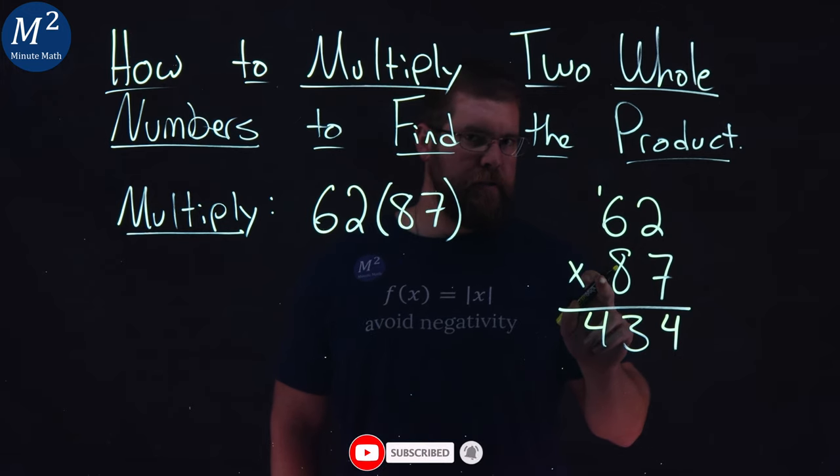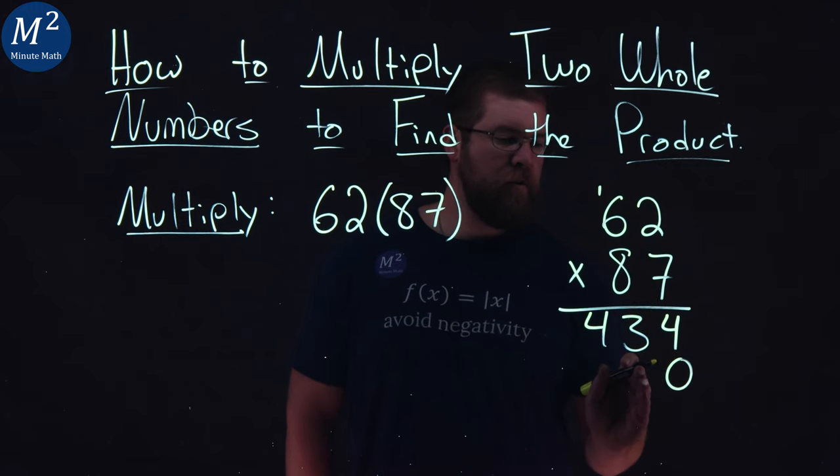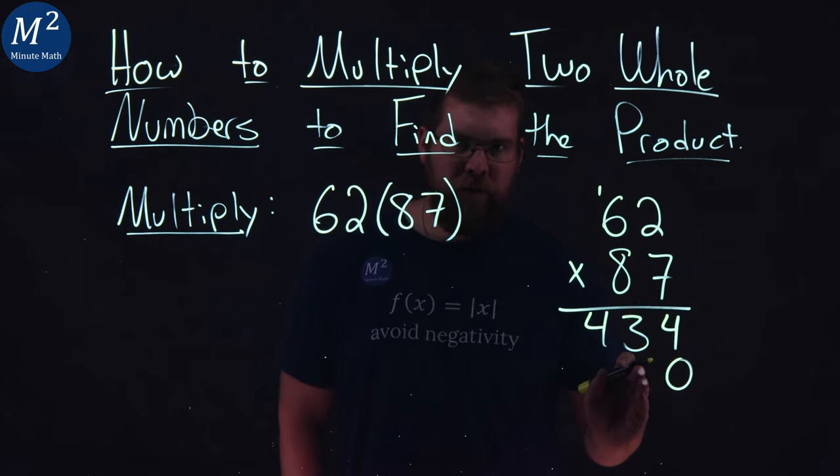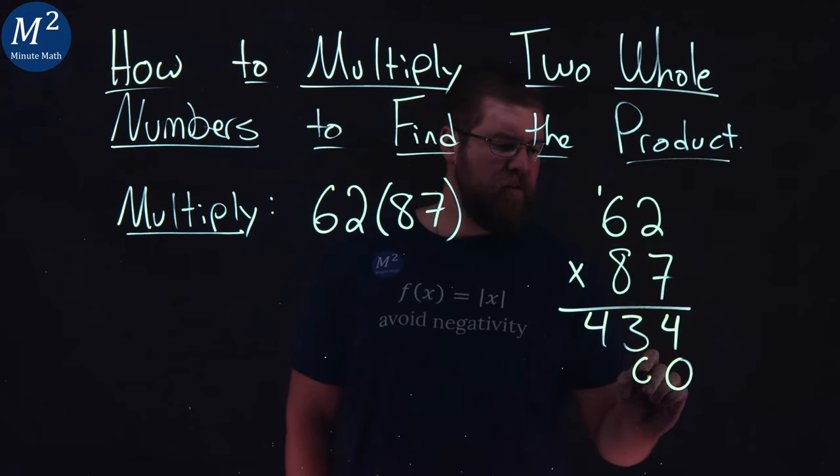But now I have to deal with this eight. So I'm going to put a zero because now we're in the tens place. I'm going to put a place value of zero to bring one over. Now I'm going to follow the same process. Eight times two is 16.